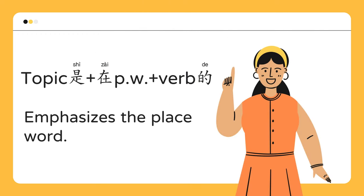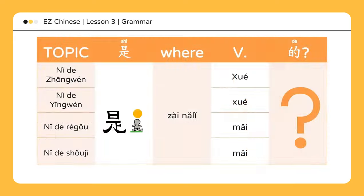The second pattern is: topic plus 是 plus 在 plus place word plus verb plus 的. The topic can be the subject. The action in such sentences has already been completed, so the emphasis is on where the action took place.